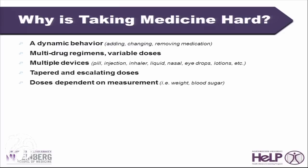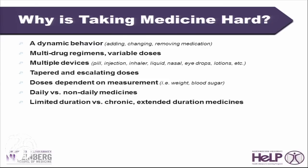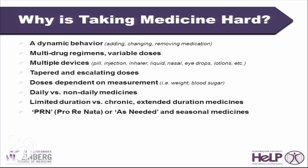You have multi-drug regimens with variable doses. You have multiple devices — not just pills, but inhalers in asthma, with many multiple devices within the inhaler as well, eye drops, lotions, et cetera. Tapered and escalating doses. Doses dependent on measurement, like what is your weight at a given moment. Daily versus non-daily medicines. Limited duration versus chronic or extended duration medicines. PRN — pro re nata — meaning as needed, and seasonal medications.